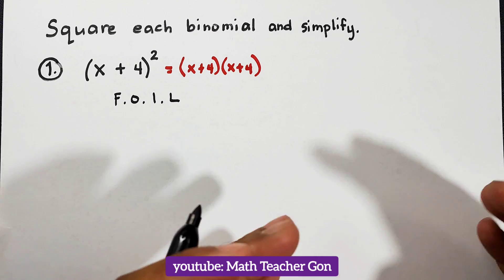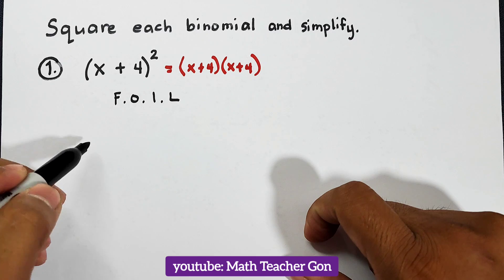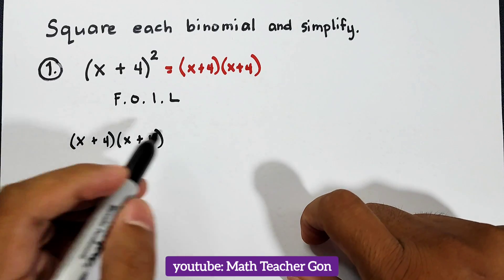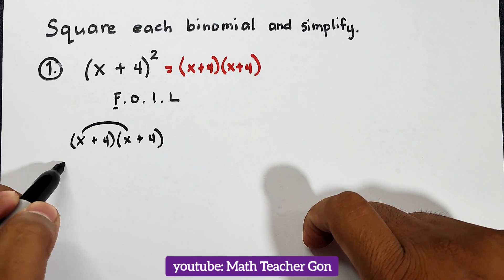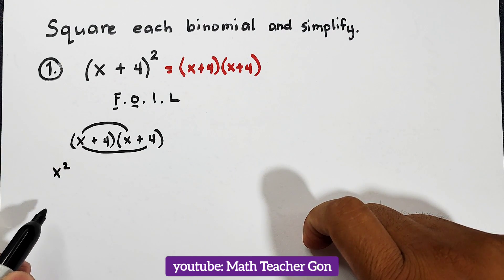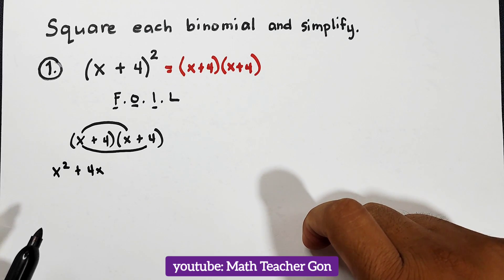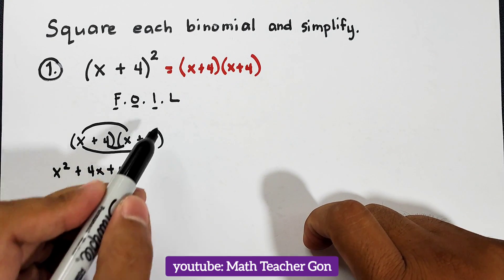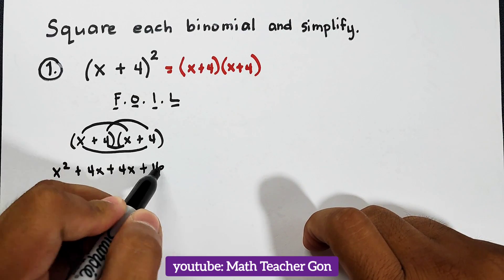Let me review the FOIL method before we go to our actual solution — just to give you an idea of the process compared to what we'll do later. So if we have x plus 4 times x plus 4 using the FOIL method: multiply the First terms — x times x is x squared; then the Outer terms — x times 4 is plus 4x; then the Inner terms — 4 times x is another plus 4x; and lastly the Last terms — 4 times 4 is plus 16.